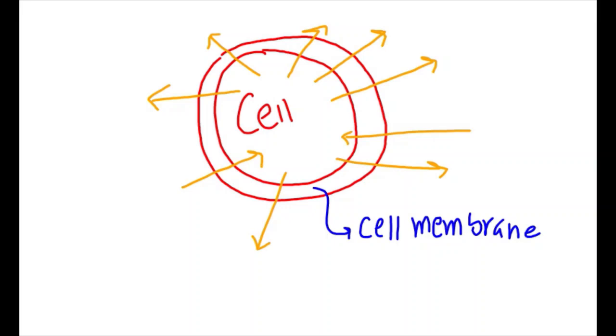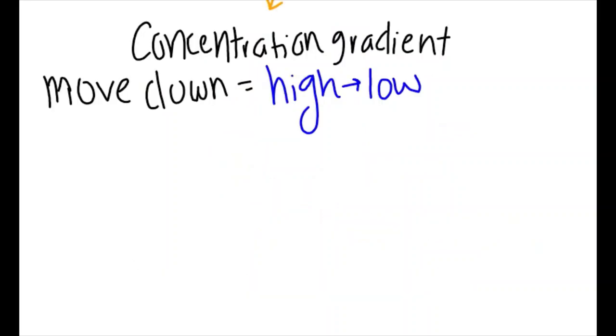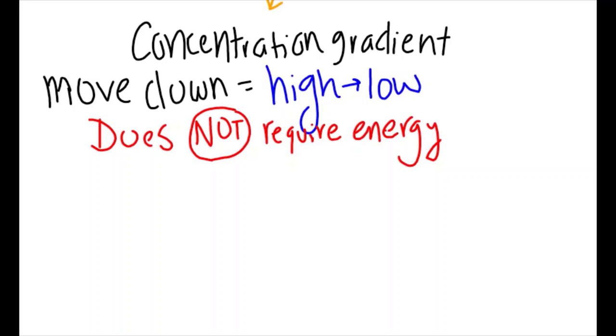Now, when we have our cell membrane, molecules can move into and out of the cell, depending on the concentration gradient. When it comes to concentration gradients, substances like to move down the gradient, or from a high concentration of the substance to a low concentration of the substance. They do this because it does not require energy in order to move substances in this direction.